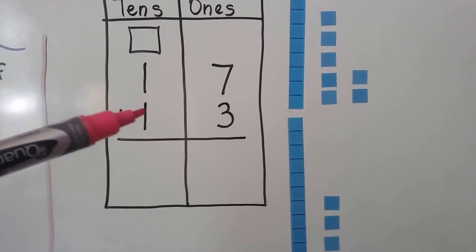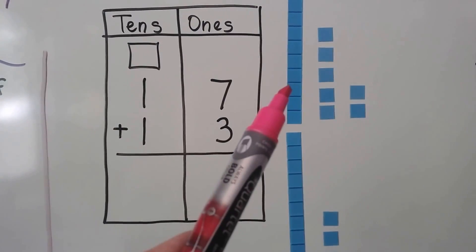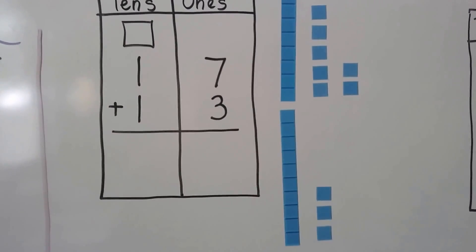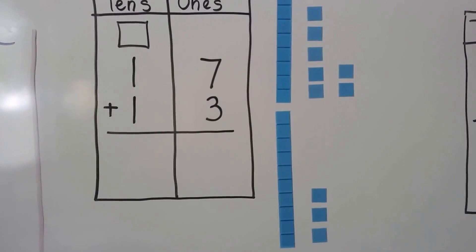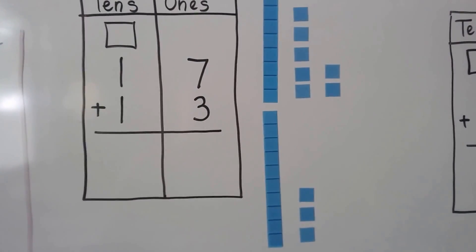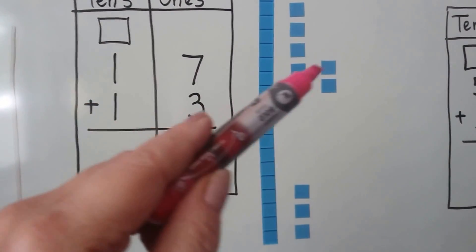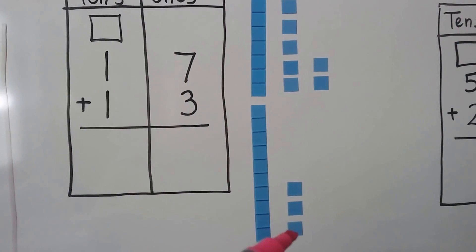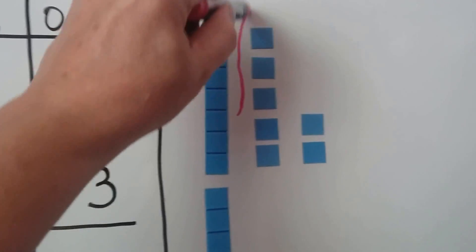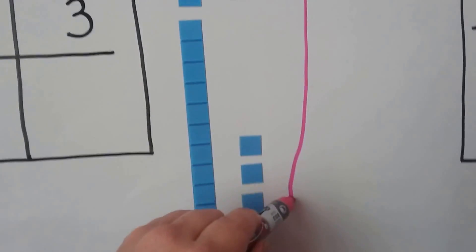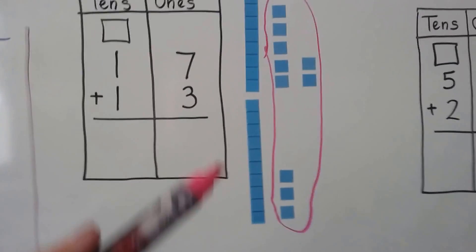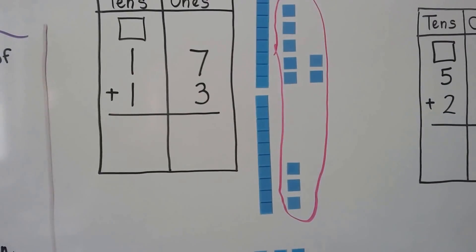We're going to add 17 plus 13. So we have a 10 and 7 ones for the 17, and we have a 10 and 3 ones for the 13. We need to see if we can make a 10 out of these ones and circle a group of 10. So we have 7, 8, 9, 10. We can use all the ones to make a new 10. We can circle all of these ones because 7 plus 3 is 10.